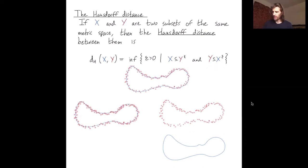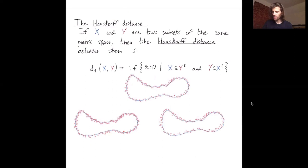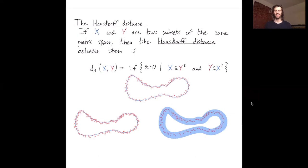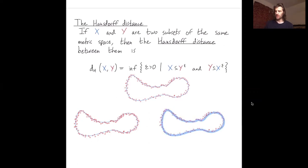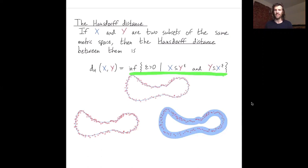I also need to look in the reverse direction. We need to consider thickenings of x so that y is contained in the thickenings of x. I can thicken x — the blue curve gets larger and larger — and eventually, once I thicken x by enough, x contains y. So to get the Hausdorff distance, you find the smallest epsilon so that thickening y by epsilon contains x, and thickening x by epsilon contains y.